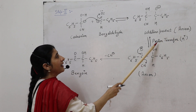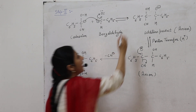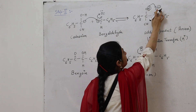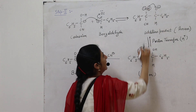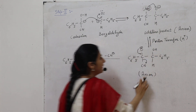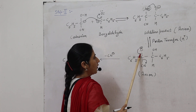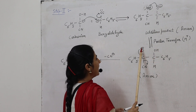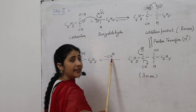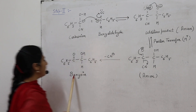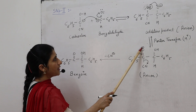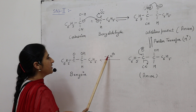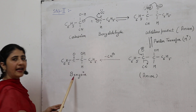This anion undergoes proton transfer from the OH group toward the oxygen. There is a proton transfer from OH to oxygen, resulting in oxygen acquiring a negative charge. We get another anion due to the negative charge on the oxygen, and the OH⁻ is converted into an OH group. This anion then eliminates the CN⁻ to give rise to the benzoin product. The negative charge on the oxygen migrates toward the C=O bond, giving rise to a C=O double bond, and CN⁻ is eliminated. In this way, we get benzoin as the final product.